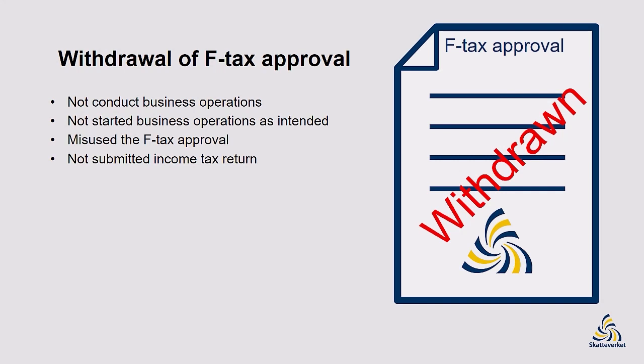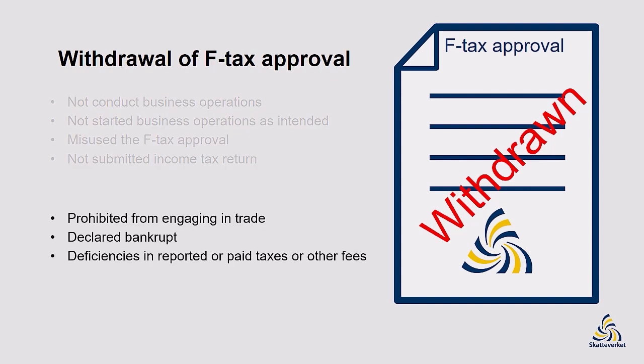The Swedish Tax Agency can withdraw F-tax approval for several reasons. For example: if you do not conduct business operations in Sweden, or you have not started business operations as intended, or you have misused your F-tax approval and not filed an income tax return. The Swedish Tax Agency can also withdraw F-tax approval if you are prohibited from engaging in trade, are declared bankrupt, or if you have been deficient in reporting or paying taxes or other charges in Sweden. You can also request to have your F-tax approval withdrawn if you no longer need it. Keep in mind that you must delete the F-tax statement on your invoices and estimates if your approval is withdrawn.